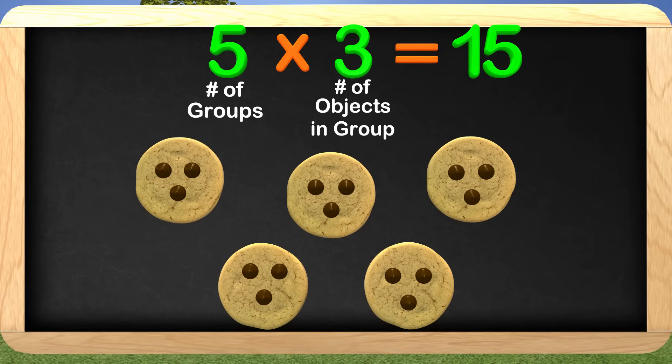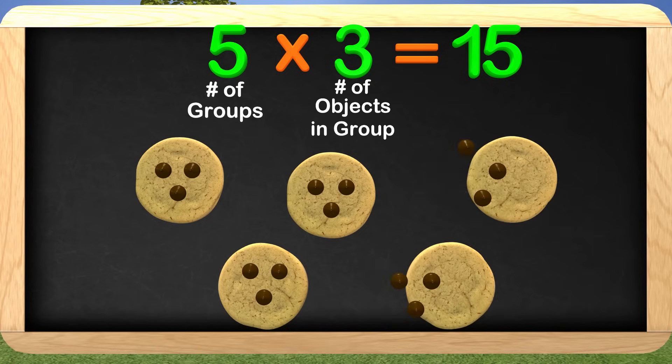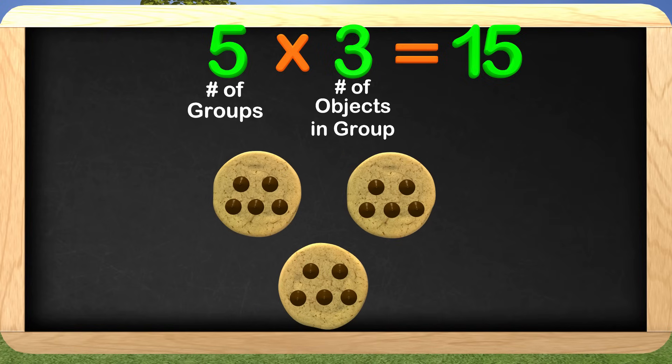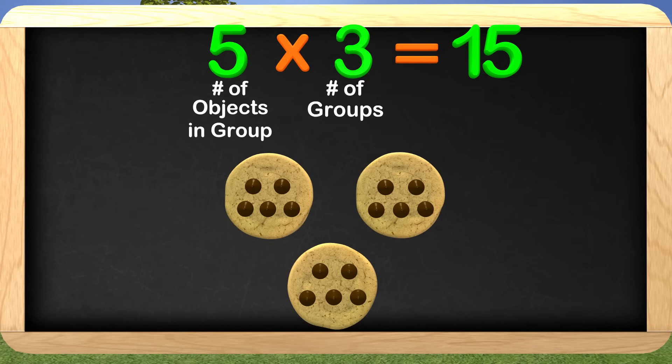There is something really cool about multiplication. Take a look at this. Here we have 3 cookies, and on each cookie there are 5 chocolate chips. What we just did was switch the number of groups and number of objects. The 3 is now the number of groups, and the 5 is now the number of objects in each group. If we count the chocolate chips, do we still get 15? Well, let's do that, but let's do it by skip counting by 5's. We start counting with this cookie. 5, 10, 15. Great job! We still get the same answer if we switch it around.